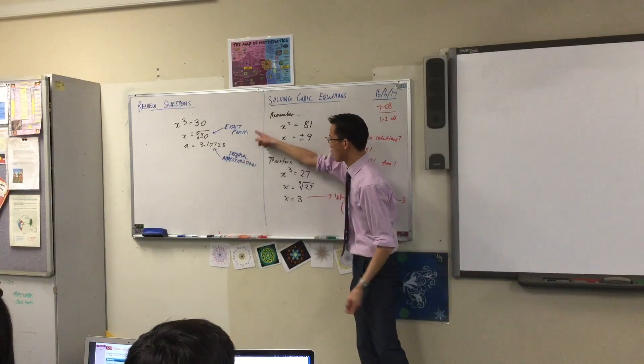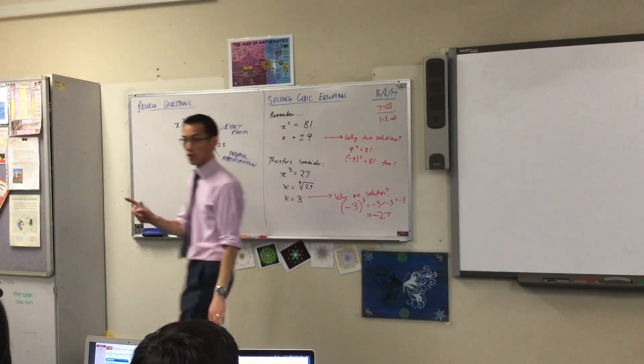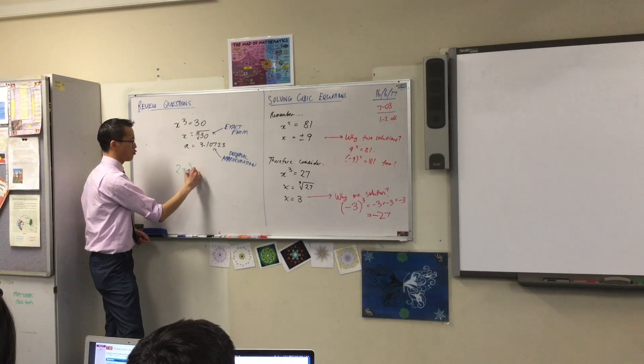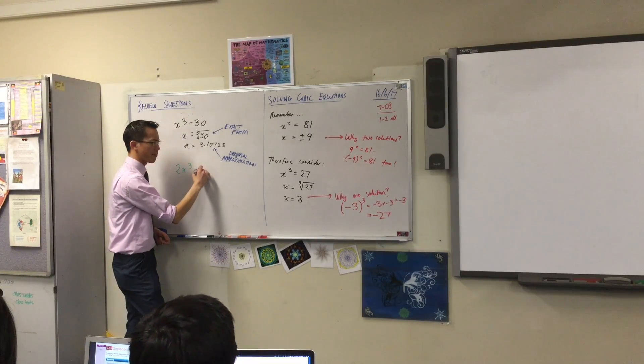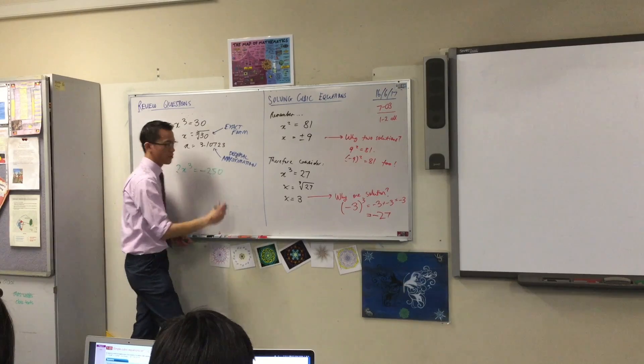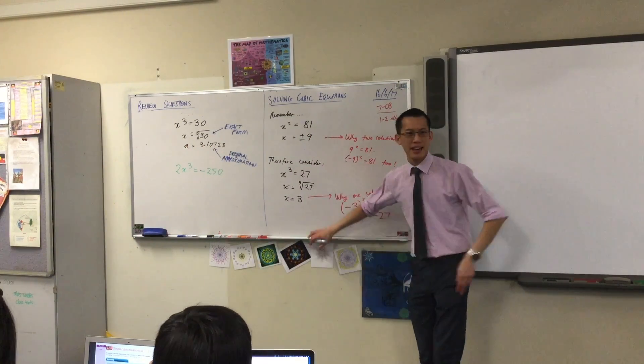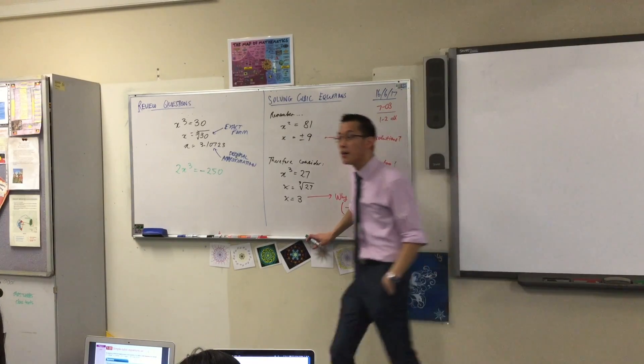So depending on what the question is asking you, it'll be one or the other. One last one. Can I just give you one last one? 2x cubed equals negative 125. What are you going to do with this guy? Any suggestions? Harib? Let's bring the 2 to the other side.